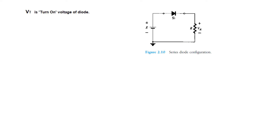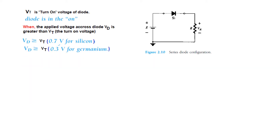A couple of terms that we will be using: VT is called turn-on voltage, and as we discussed, for silicon the turn-on voltage is 0.7 volt or greater. The diode is on when the applied voltage across the diode VD is greater than VT. So if we apply a voltage greater than 0.7, which is VT, the diode will turn on — it may be just 0.1 or 0.5 volts greater. Similarly, for germanium the VD has to be greater than VT, that is 0.3 volt.